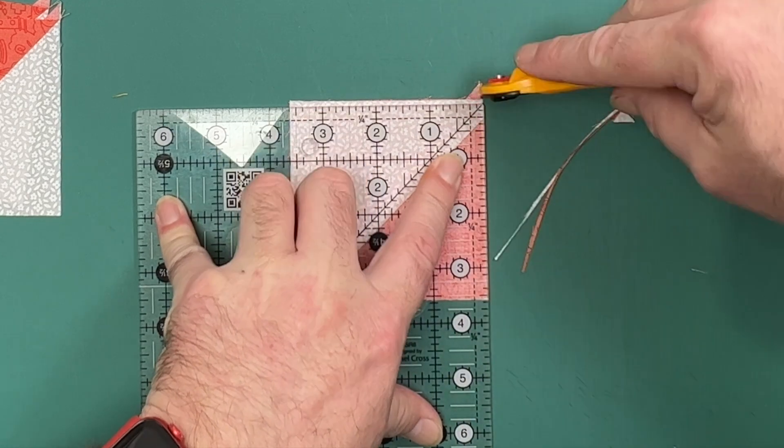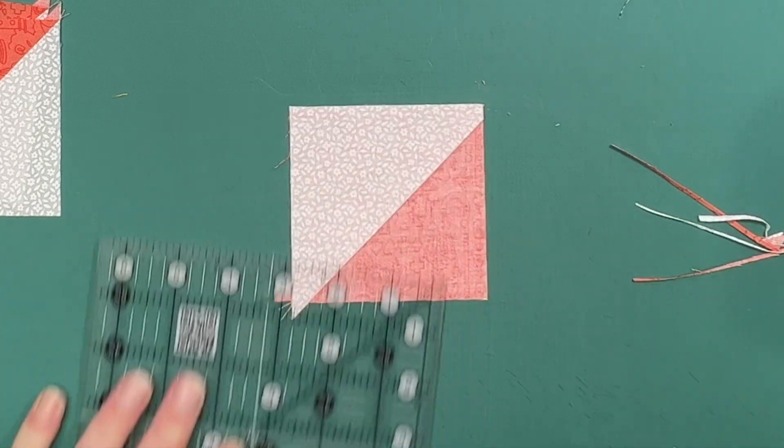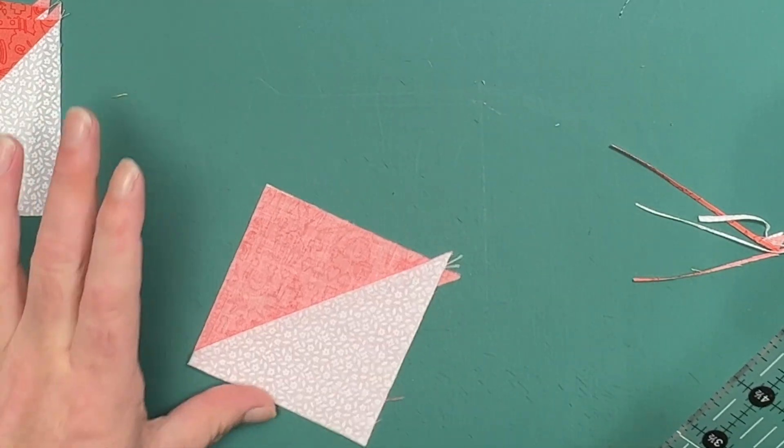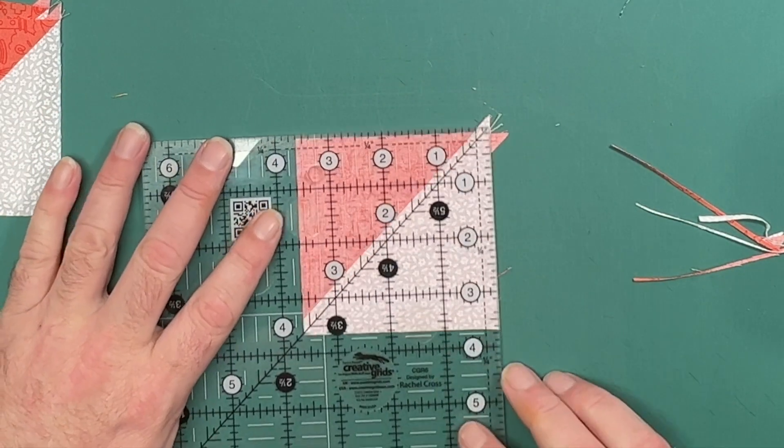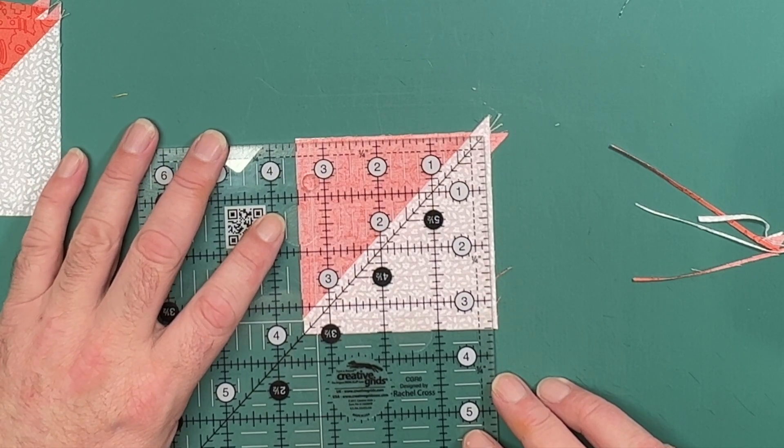I then rotate the piece very carefully and place that trim down measurement on those two freshly cut sides and measure the three and a half inches and trim the last two sides.